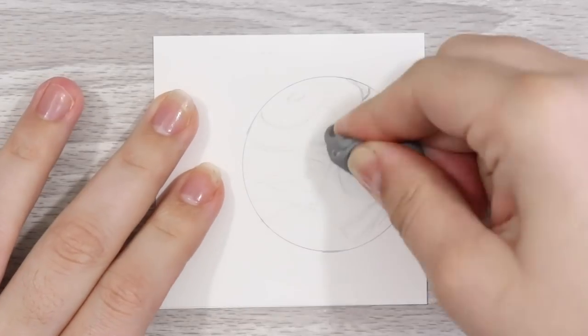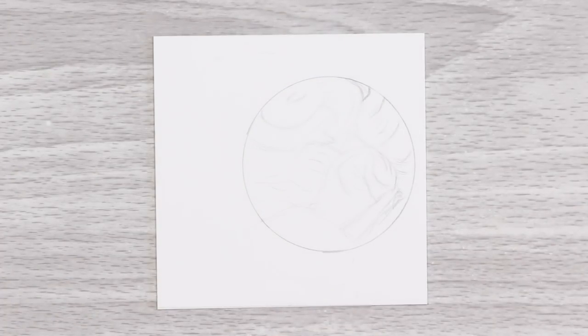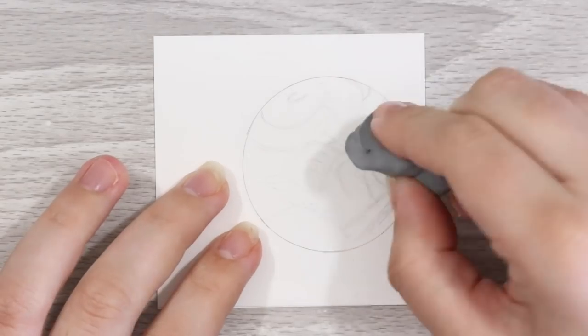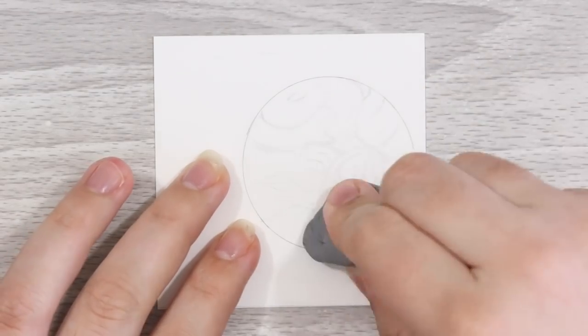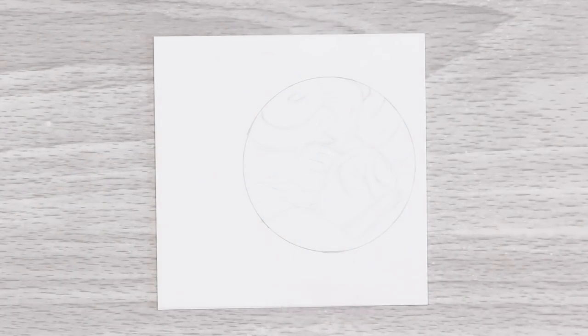We're then going to lift the graphite so it's nice and light and only just visible on the paper surface. For this I like to use a kneaded eraser as it lifts the graphite just enough so you can just about see it.